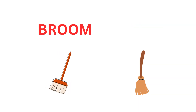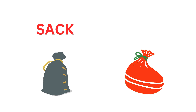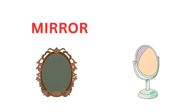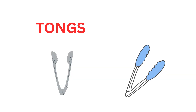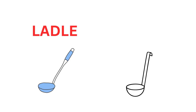Broom in Hindi is Charu. Rope in Hindi is Rassi. Sack in Hindi is Bora. Brush in Hindi is Brush. Mirror in Hindi is Aina. Inkpot in Hindi is Davat. Tongs in Hindi is Chimta. Stove in Hindi is Chulha. Ladle in Hindi is Karchul.